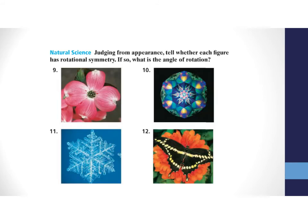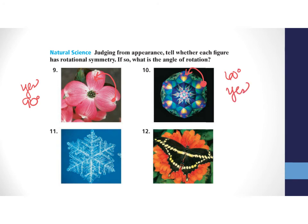For number nine, the four-petal flower: rotating one petal to the next gives the same image, so yes, it has rotational symmetry with a 90-degree angle of rotation. For number ten, the figure has six equal sections. Dividing 360 degrees by 6 gives 60 degrees, so yes, it has a 60-degree angle of rotation.